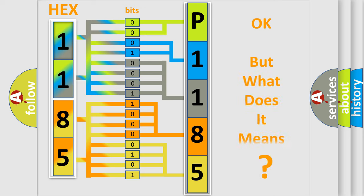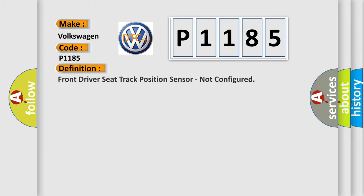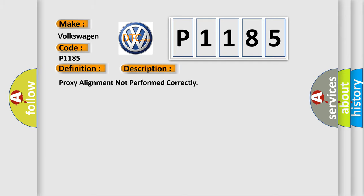We now know how the diagnostic tool translates received information into a more comprehensible format. The number itself does not make sense if we cannot assign information about what it actually expresses. So, what does the diagnostic trouble code P1185 interpret specifically for Volkswagen? The basic definition is: Front driver seat track position sensor, not configured. The short description of this DTC code is: Proxy alignment not performed correctly.